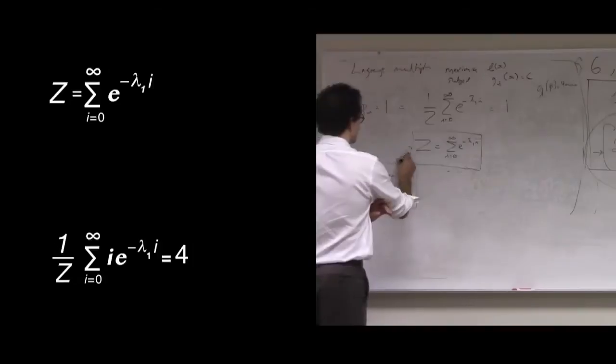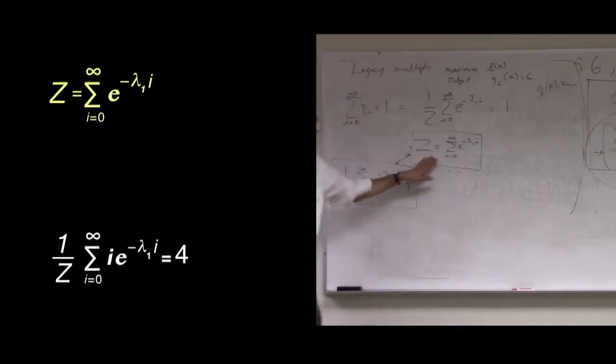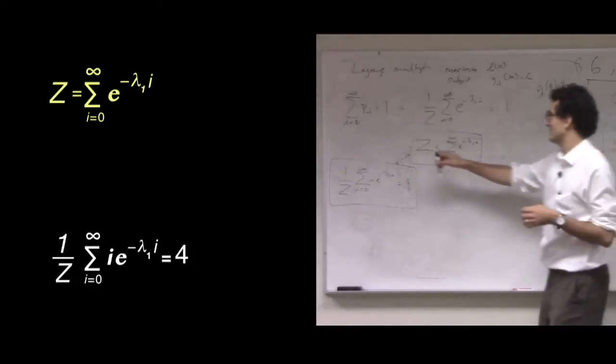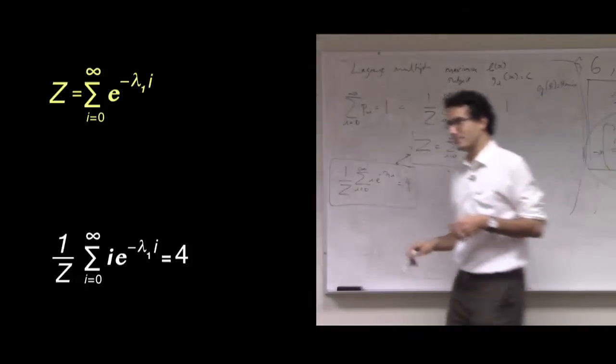So, we have two equations. One equation tells us the relationship between the two Lagrange multipliers. In particular, it tells us z is a function of lambda 1.